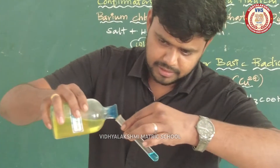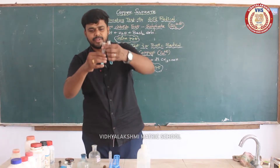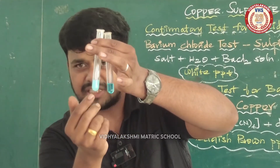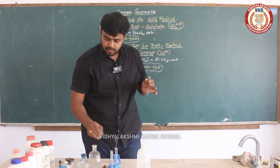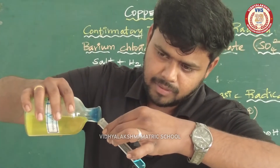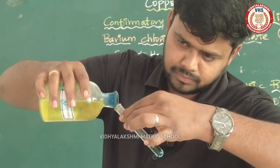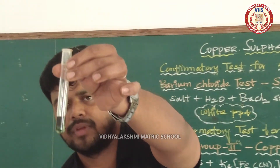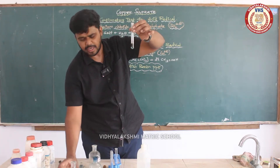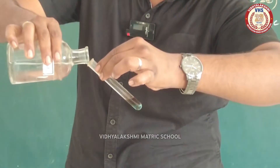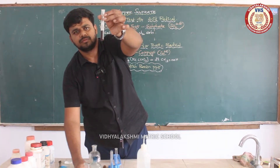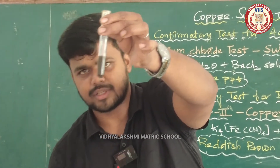There is a blue color solution. You can see the same color naturally. In this case, we have to test a different color and change to white color. This color is copper. Adding potassium ferrocyanide to copper gives a reddish brown precipitate — this is the confirmatory test for copper sulfate.